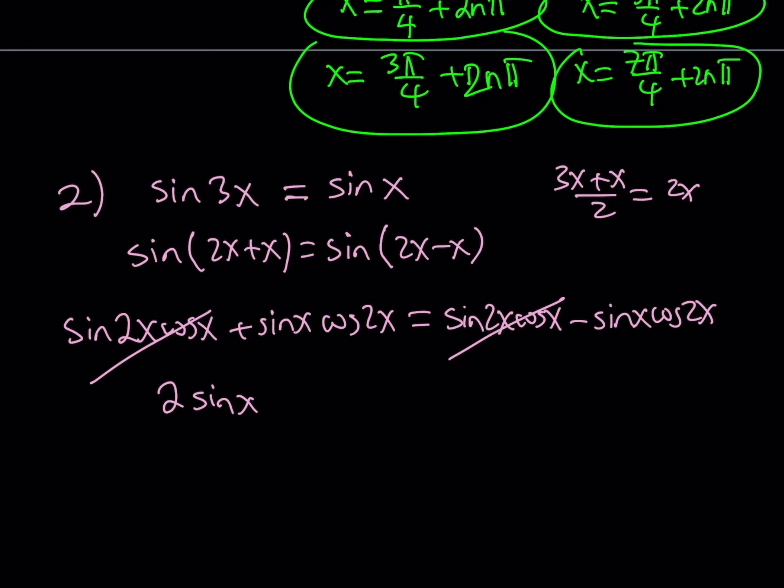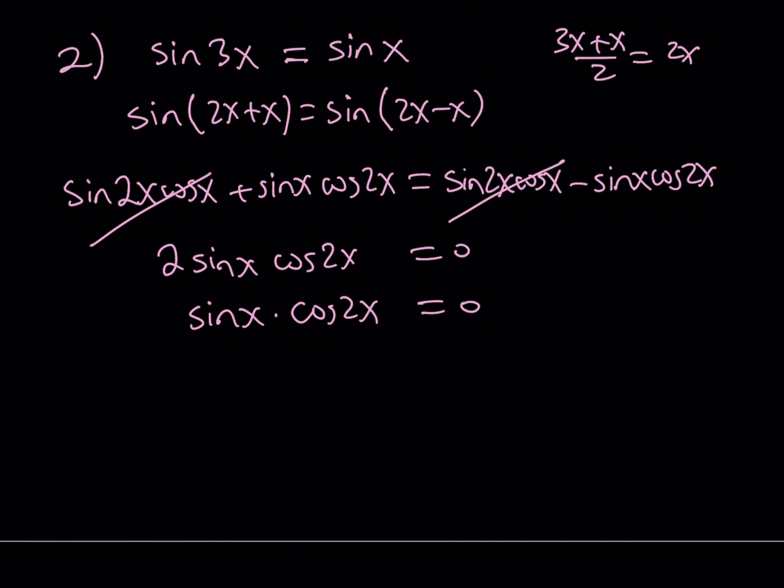2 sine x, cosine of 2x is equal to 0. And divide both sides by 2, and you're going to get sine x, cosine 2x as a product is equal to 0. Obviously, from here, we are supposed to get the same solutions.